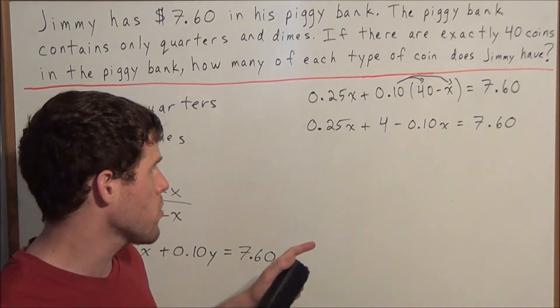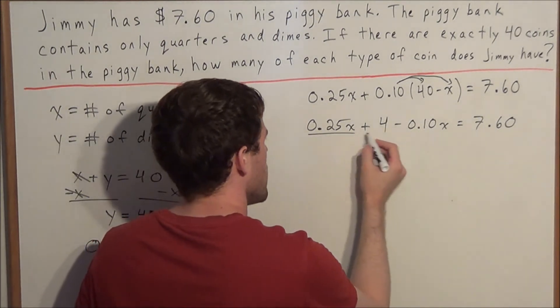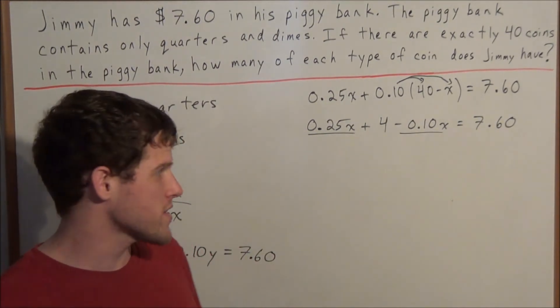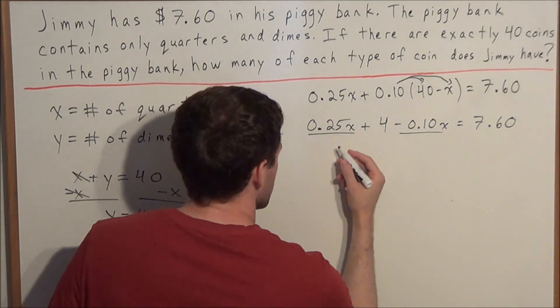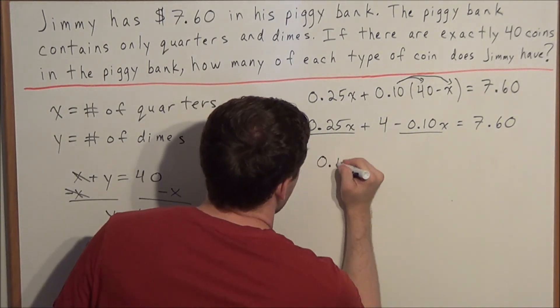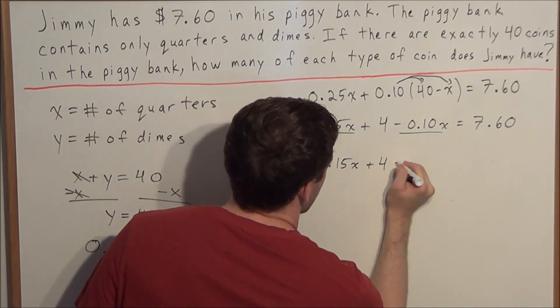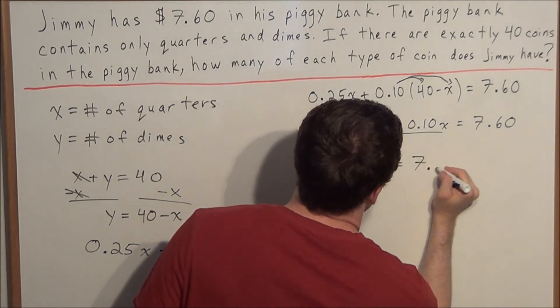So now for the next line, we can combine like terms. We have a positive 0.25x and a negative 0.10x. So when we combine those two, we should get 0.15x, and now we have plus 4 is equal to 7.60.